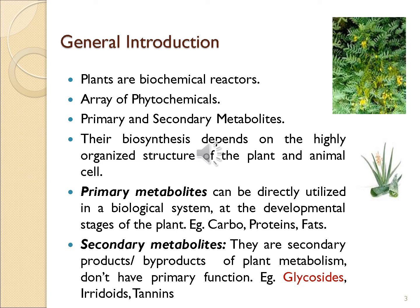Primary metabolites can be directly utilized in a biological system at the developmental stages of a plant. Examples are carbohydrates, proteins, and fats. The first molecule that a plant produces in photosynthesis is sugar. Secondary metabolites are secondary products or byproducts of plant metabolism which do not have primary functions. Examples include glycosides.